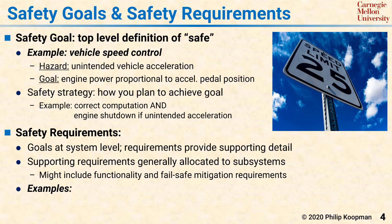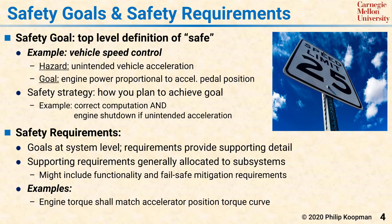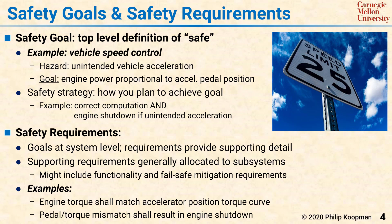Continuing the vehicle speed example, a normal functionality requirement would be to ensure that the engine torque is properly computed based on the position of the accelerator pedal. But a second safety requirement could be that any pedal-to-torque computation mismatch that might be caused by a system failure would result in an engine shutdown via some independent functional safety shutdown mechanism.